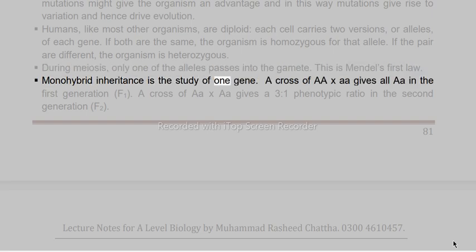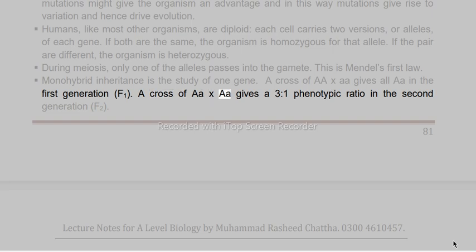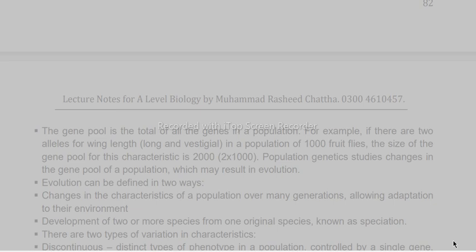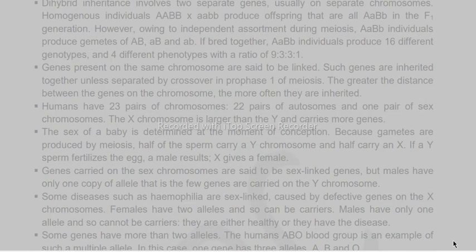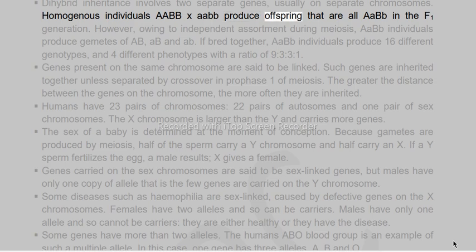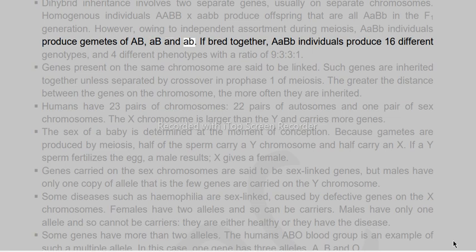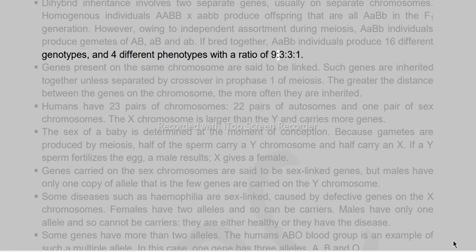Monohybrid inheritance is the study of one gene. A cross of AA × AA gives all AA in the first generation (F1). A cross of AA × aa gives a 3:1 phenotypic ratio in the second generation (F2). Dihybrid inheritance involves two separate genes, usually on separate chromosomes. Homozygous individuals AABB × aabb produce offspring that are all AaBb in the F1 generation. Owing to independent assortment during meiosis, AaBb individuals produce gametes of AB, Ab, aB, and ab. If bred together, they produce 16 different genotypes and 4 different phenotypes with a ratio of 9:3:3:1.